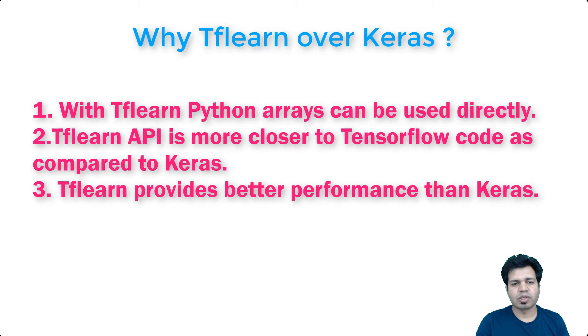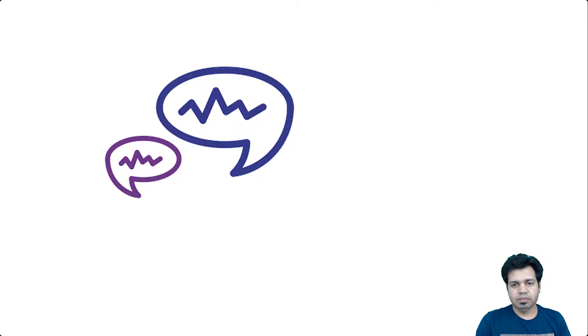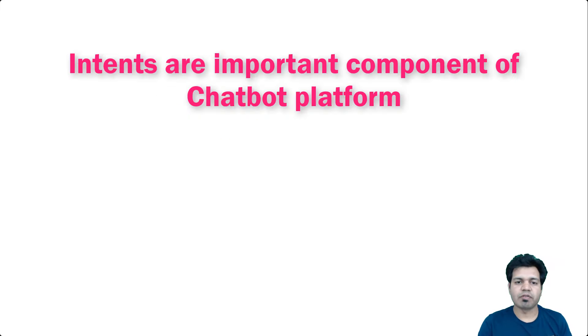A chatbot framework essentially needs a document or documents containing conversations in the form of questions and answers. This is required so that our deep learning neural network can understand the intent or context in which these conversations are taking place. Essentially, we need a structure in which conversational intents are defined, because intent is an important component of a chatbot platform.